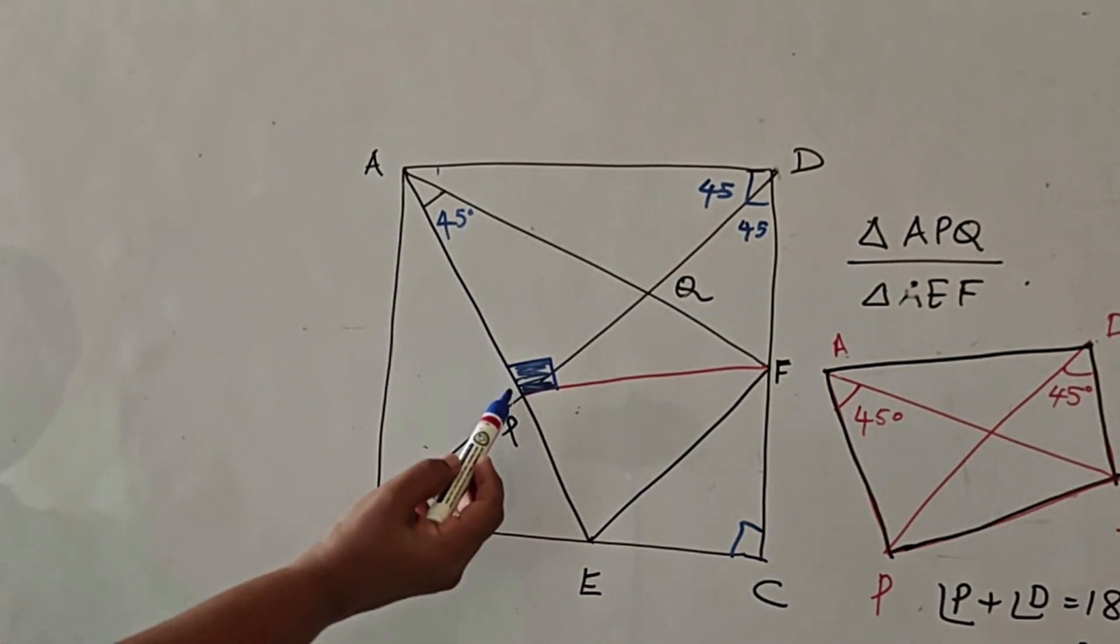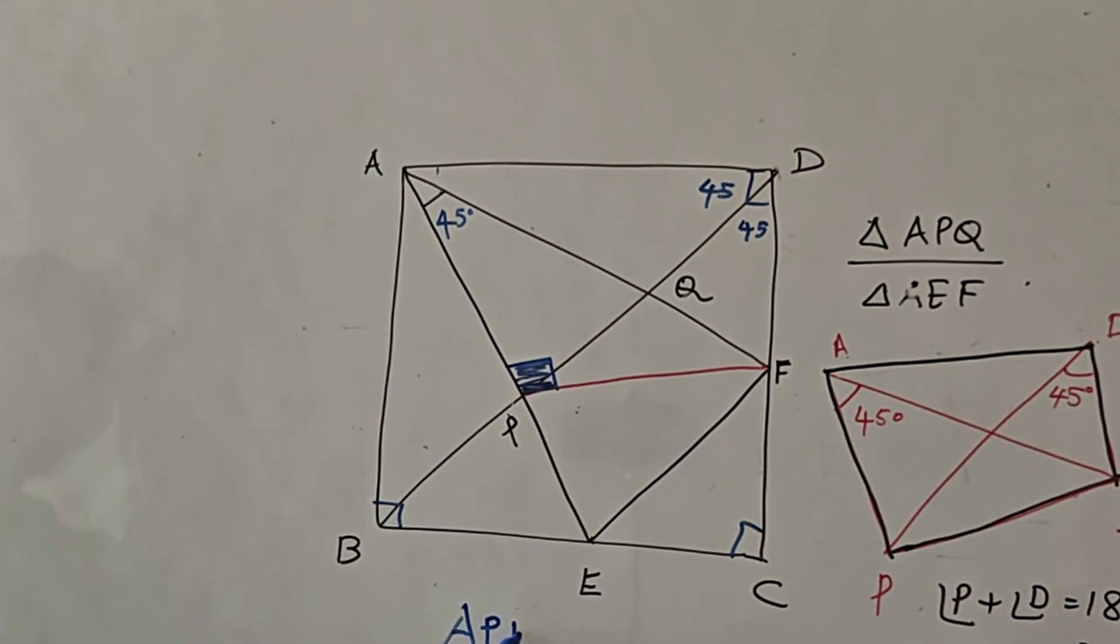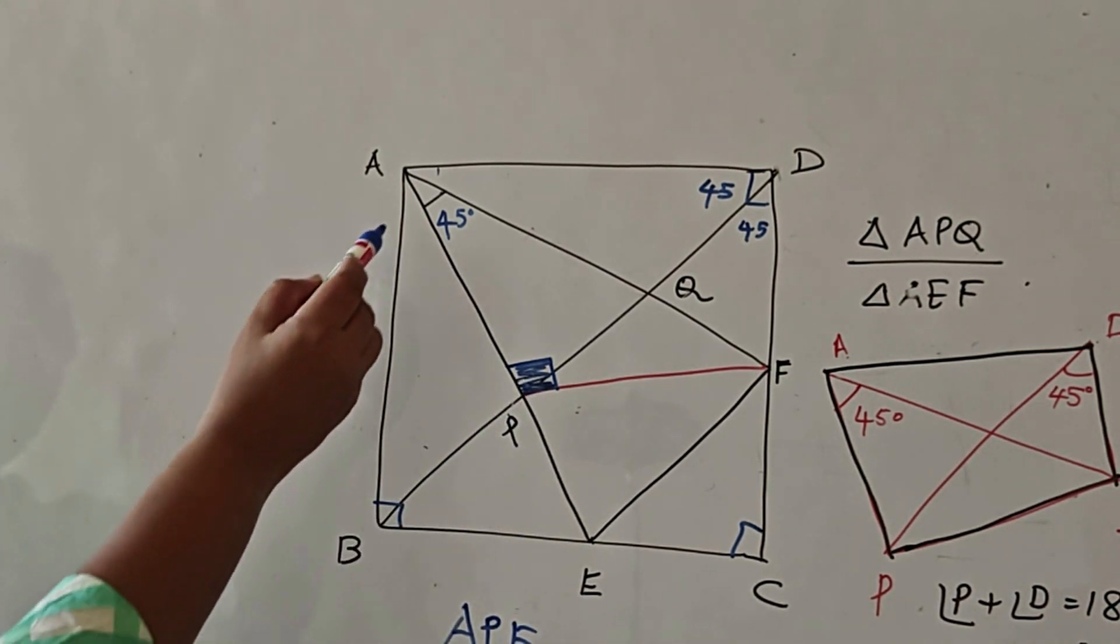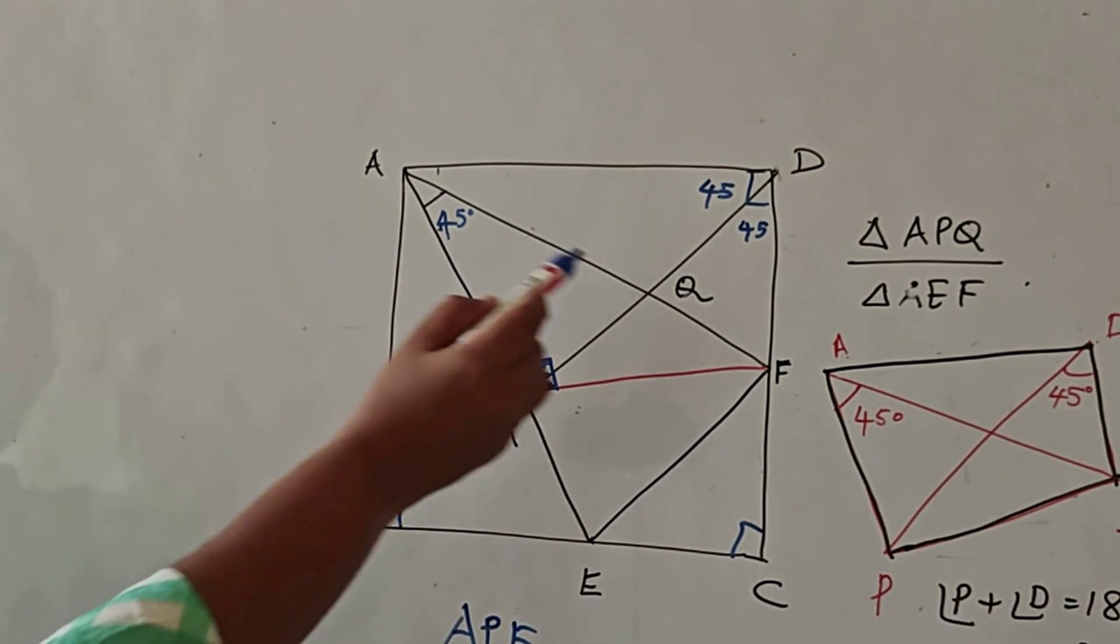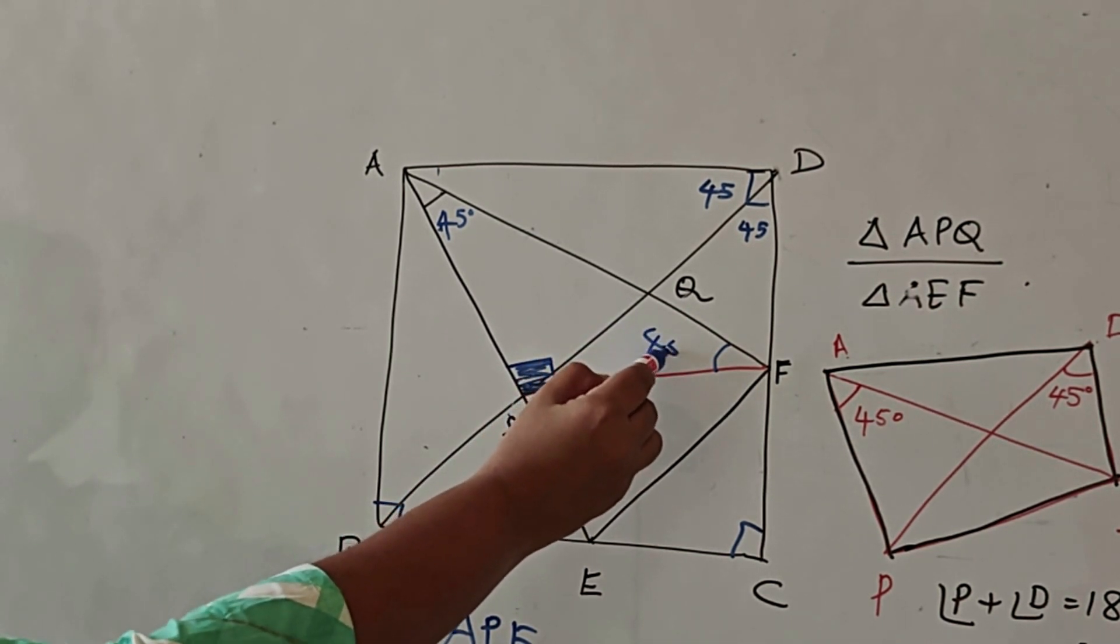If you look at the triangle APF, P is 90, angle A over here is 45. So this angle, the remaining angle, will be 45 degrees.